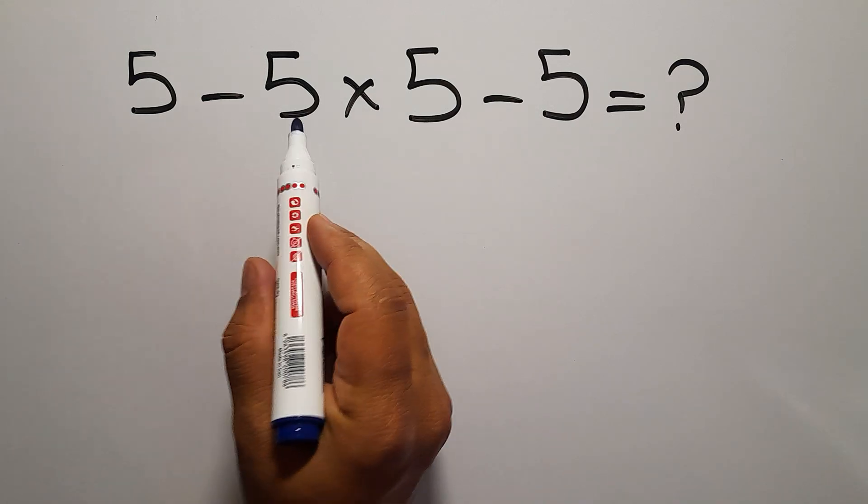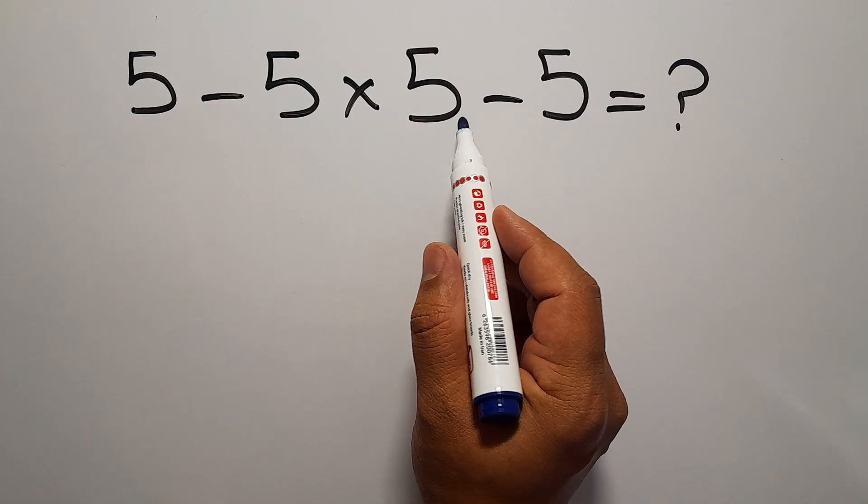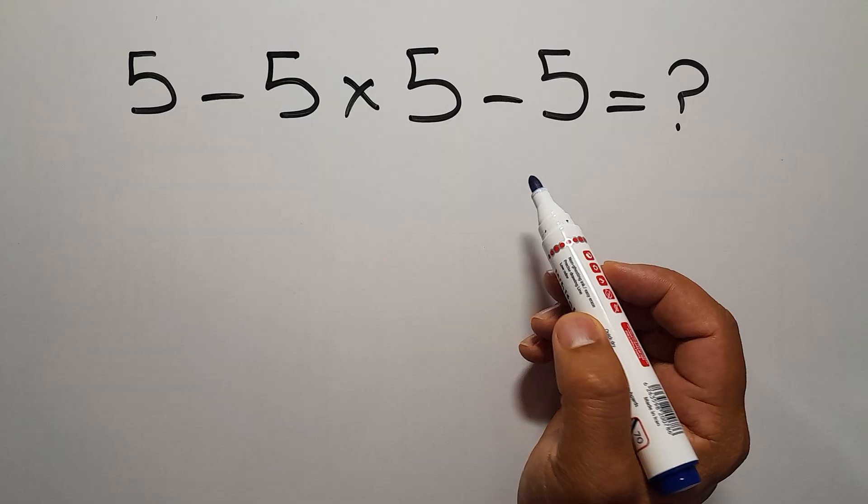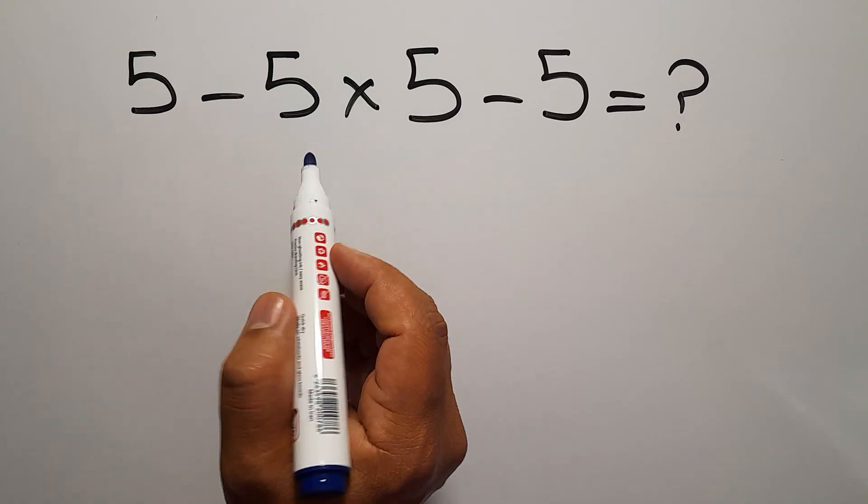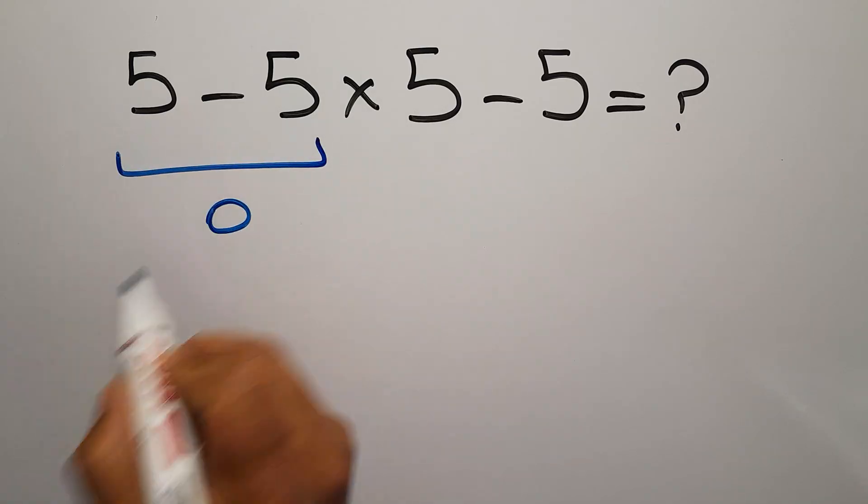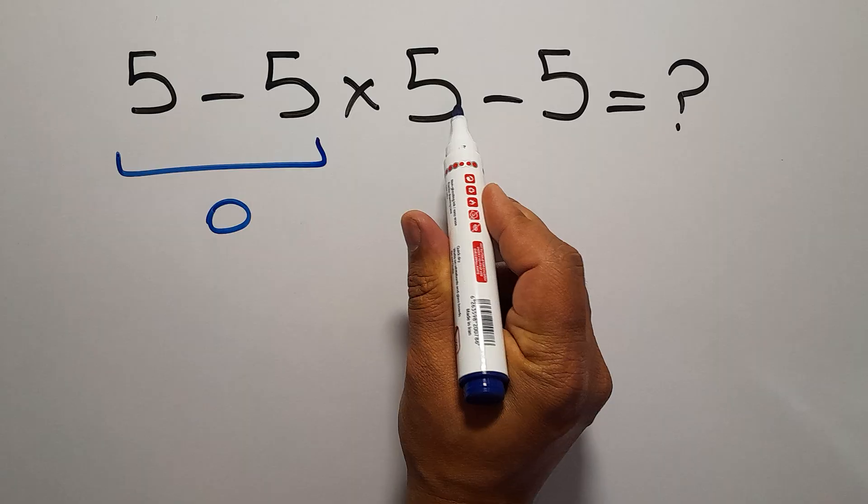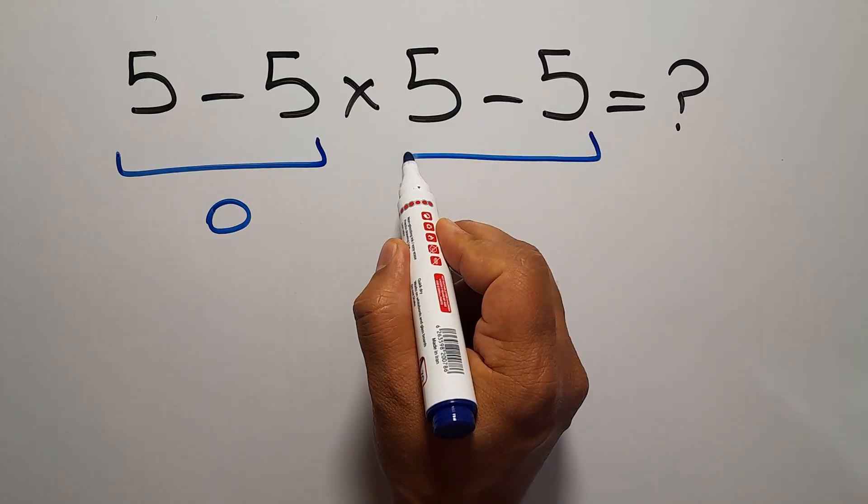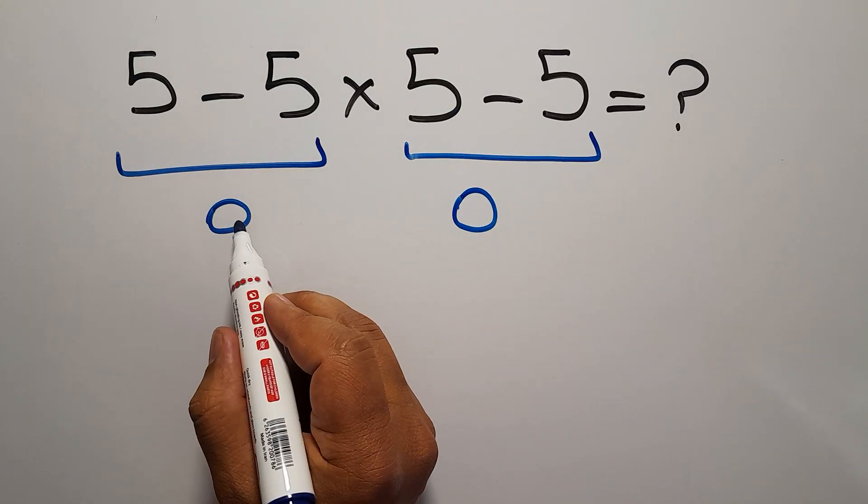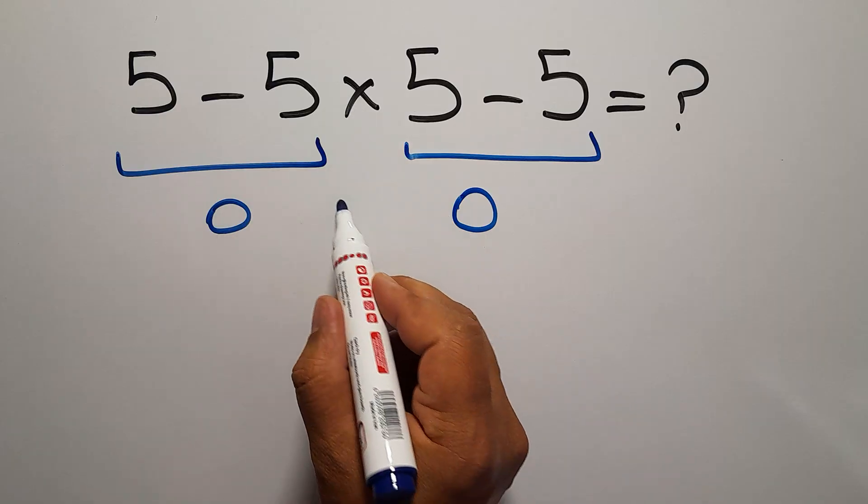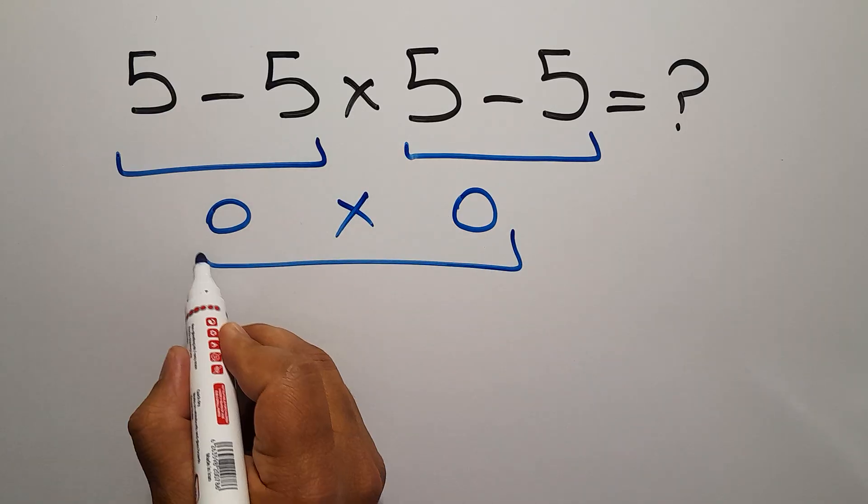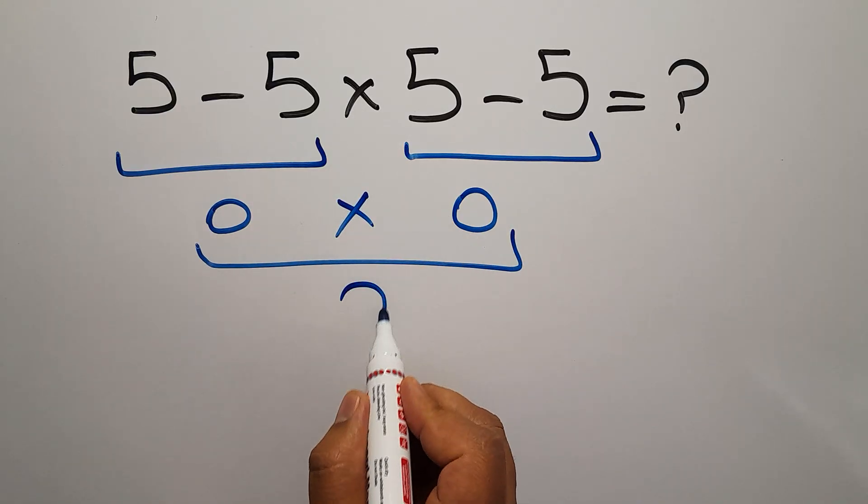5 minus 5 times 5 minus 5. If we do 5 minus 5, we get 0. And again, 5 minus 5 equals 0. So 0 times 0 equals 0.